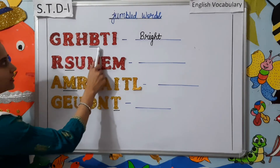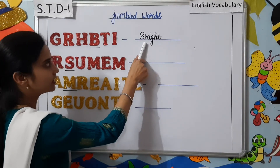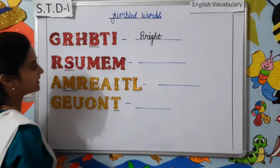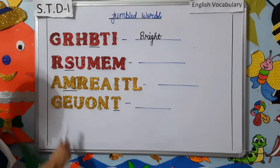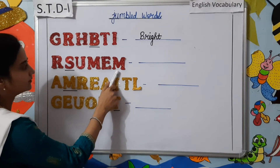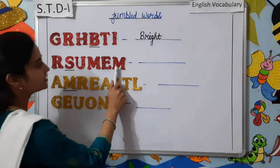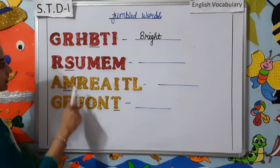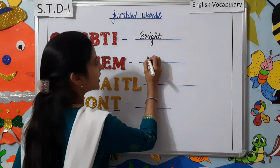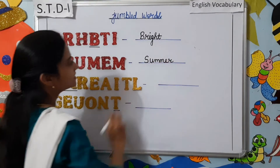This is the jumbled word students and we have written it correctly. The correct spelling is B-R-I-G-H-T. Bright. The next one: R-S-U-M-E-M. We have to change this word and write the correct word. We have to start with the letter S. So the correct spelling is S-U-M-M-E-R. Summer.